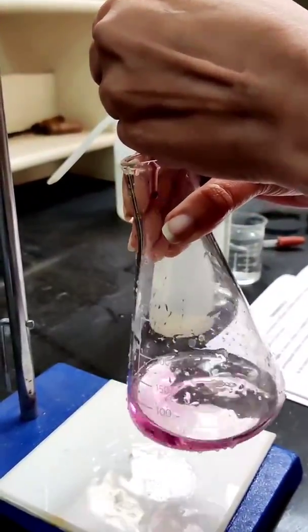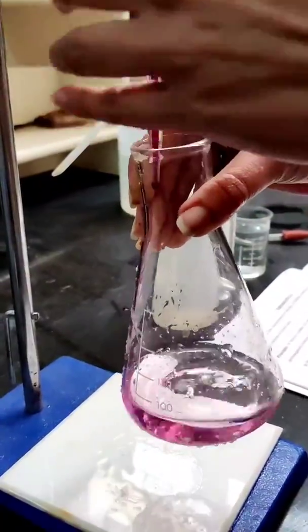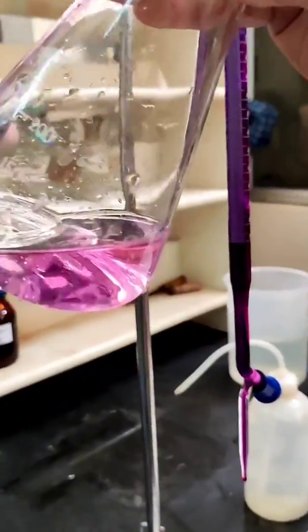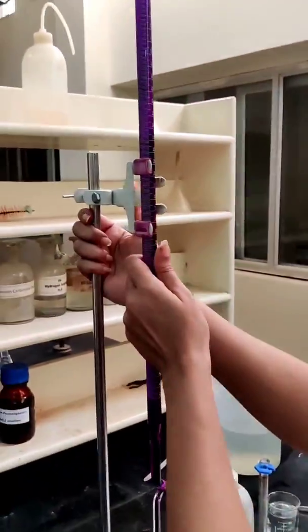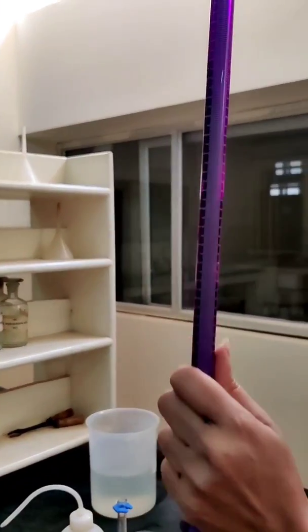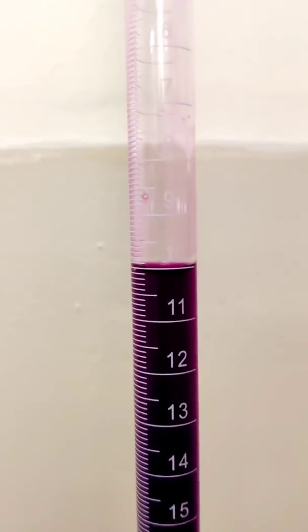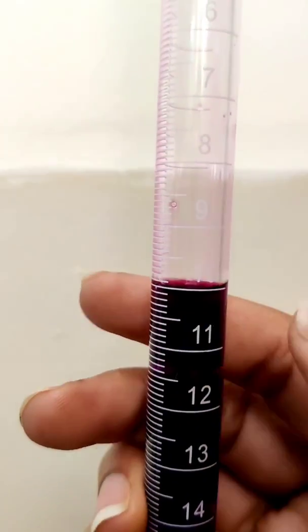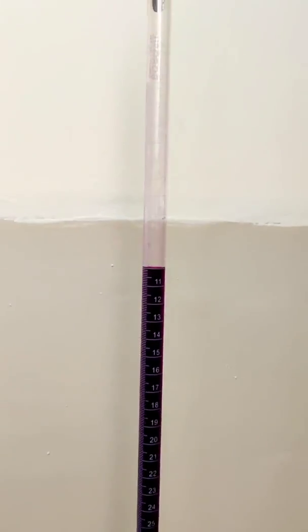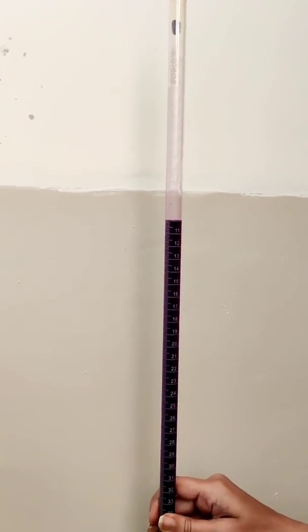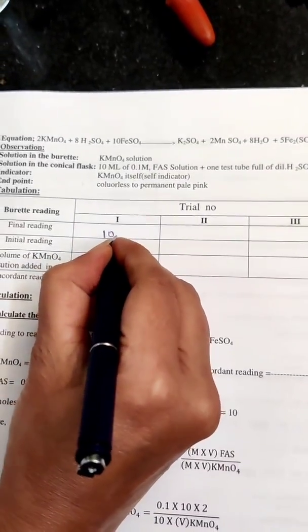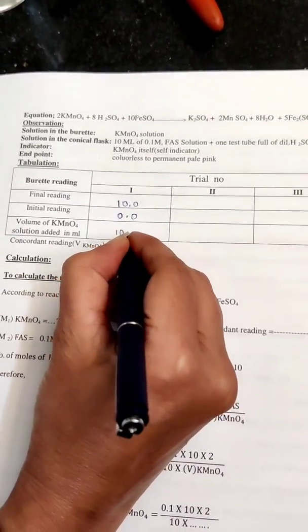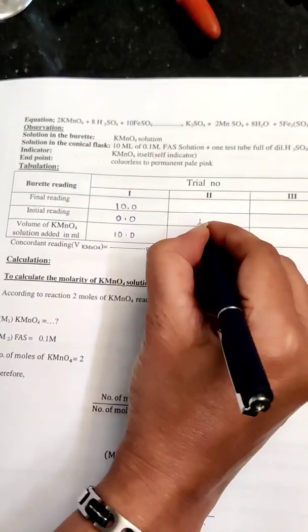Now, the solution has turned to pale pink color. You can see the pale pink color. Now, unclamp the burette and bring it to your eye level. Note down the final reading. You need to consider the upper meniscus. Note down the reading.